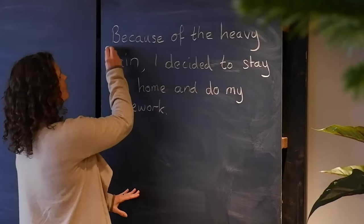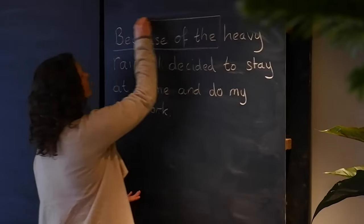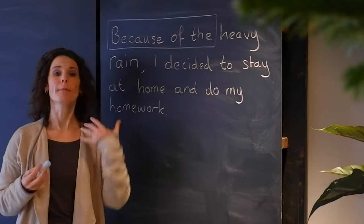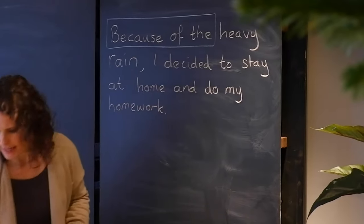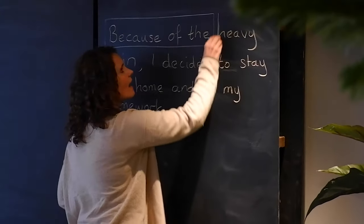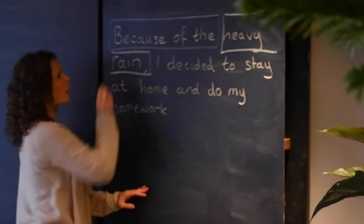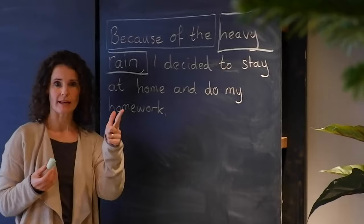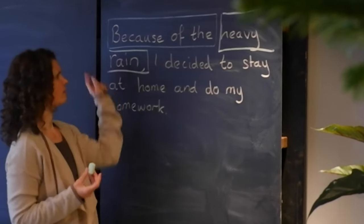For example, if we learn the phrase 'because of the' — that's one piece of language to learn. It's a common phrase we use together. The next part of the sentence we have the expression 'heavy rain,' so we can learn that as one part. 'Because of the heavy rain' — that's two things we need to learn instead of five.